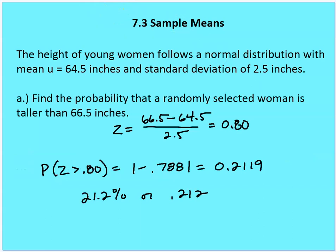For Part A, find the probability that a randomly selected woman is taller than 66.5 inches. We go straight to the table: 66.5 minus 64.5 divided by the standard deviation of 2.5 gives a Z score of 0.80. The probability that Z is greater than 0.80 is 1 minus 0.7881, which equals 0.2119 — about 21.2% of the time we'll find a randomly selected woman taller than 66.5 inches.